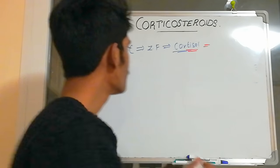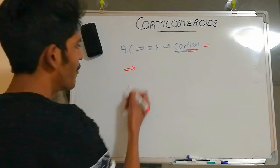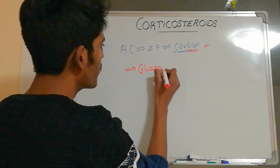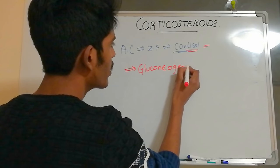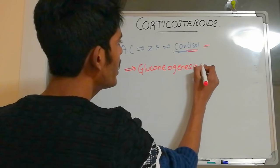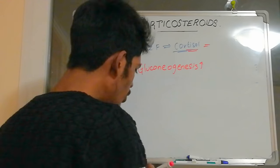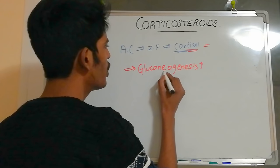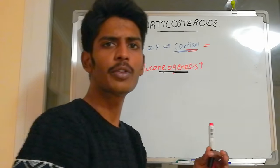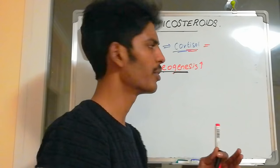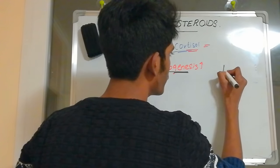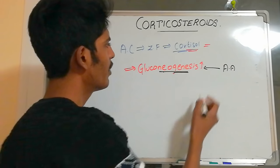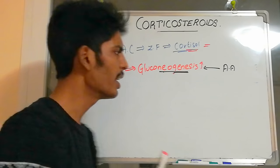When cortisol or artificially produced corticosteroid drugs are introduced into a person, they have an effect on glucose metabolism. They will cause gluconeogenesis — meaning glucose is produced from non-carbohydrate stores such as amino acids. So whenever glucocorticoids are in the body, they increase gluconeogenesis.